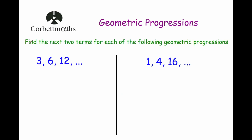Let's have a look at some questions. The first question says: find the next two terms of each of the following geometric progressions. We have the numbers 3, 6, 12. To find what we are multiplying by each time, divide 6 by 3, which gives 2. We could also do 12 divided by 6 and see that is 2. So each time we are multiplying by 2 — multiply by 2 again to get 24, and multiply by 2 again to get 48.